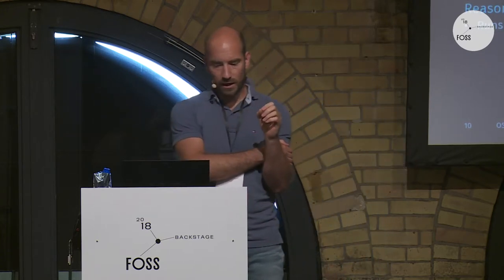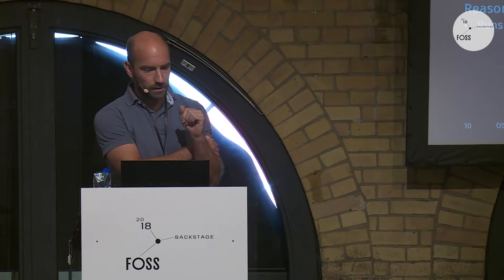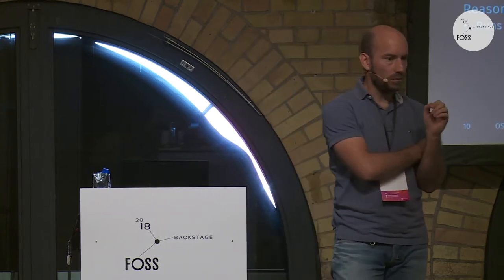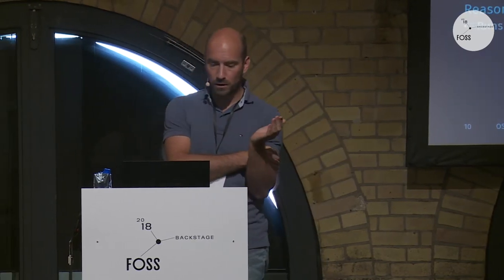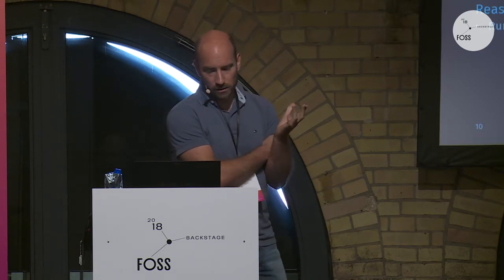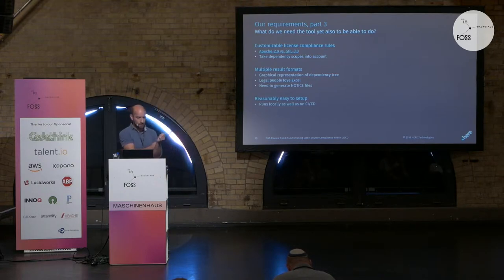For efficient CI use, we need fast incremental scans by reusing existing results and being able to do delta scans. When it comes to looking at results, we want a rules engine to apply license compliance rules — so our legal department can give us computable rules for the majority of cases, taking into account things like the scopes of a dependency. In Maven, for example, a test dependency usually doesn't get shipped, so you probably don't care about it. We would also like multiple result formats: graphical dependency tree, Excel for legal review, and generated notice files.